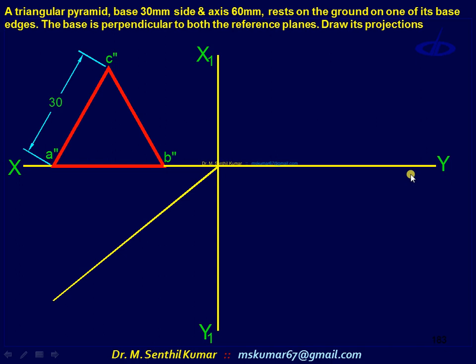Draw X1, Y1 reference lines, and complete the side view first. Mark points A double dash, B double dash, C double dash for the triangular pyramid. It rests on the ground on one of its base edges, so this base edge A double dash, B double dash is on the ground.